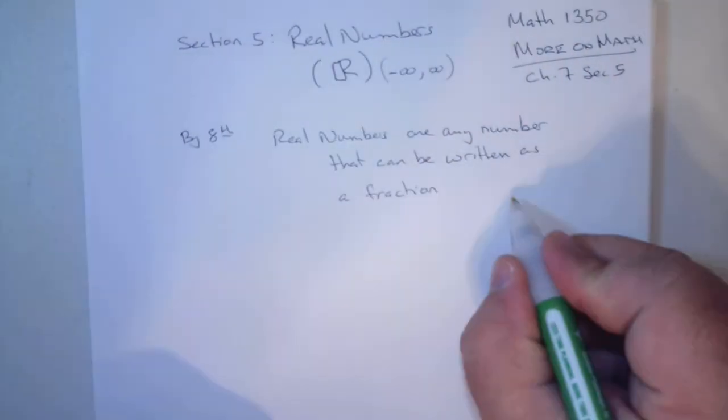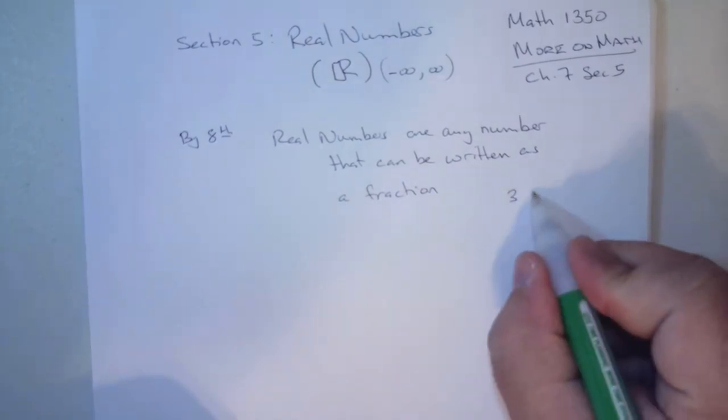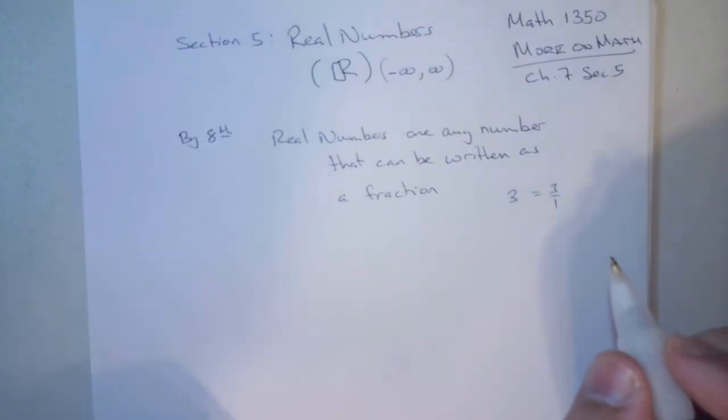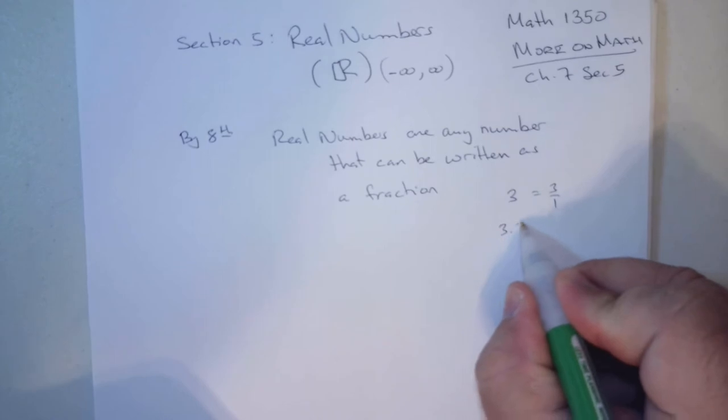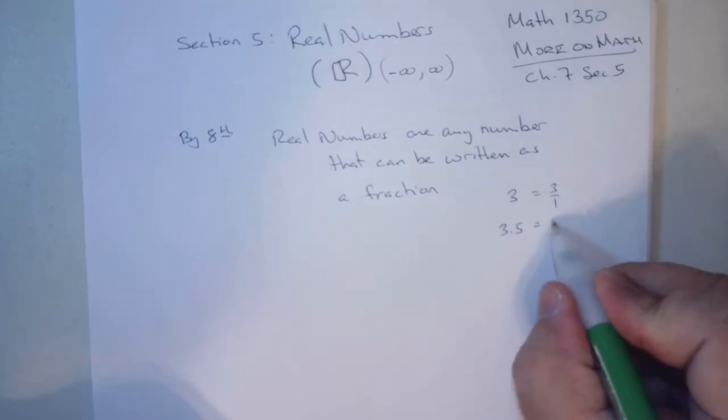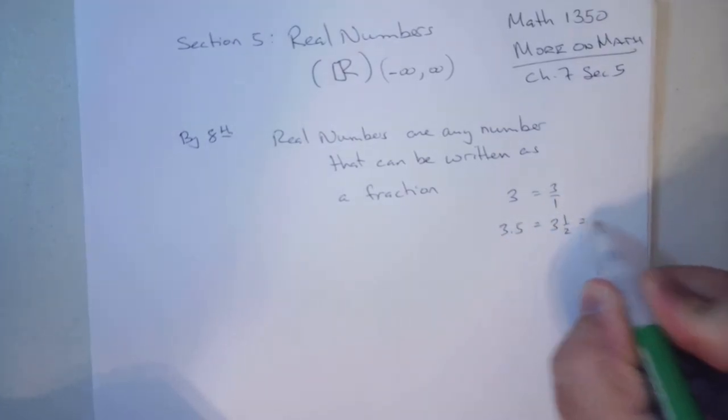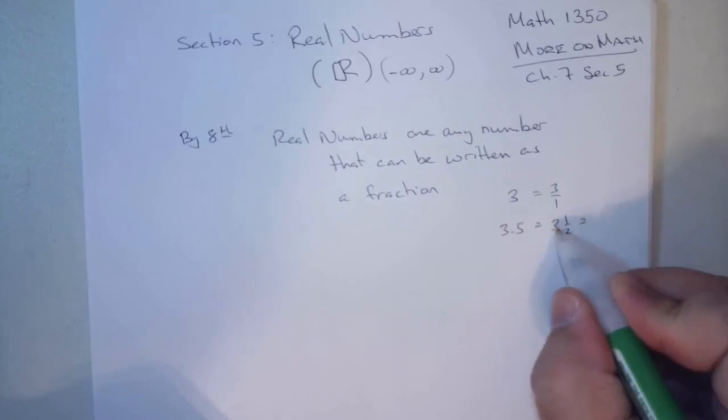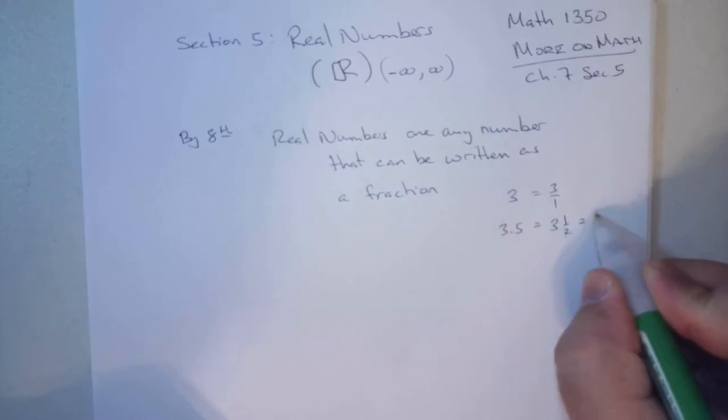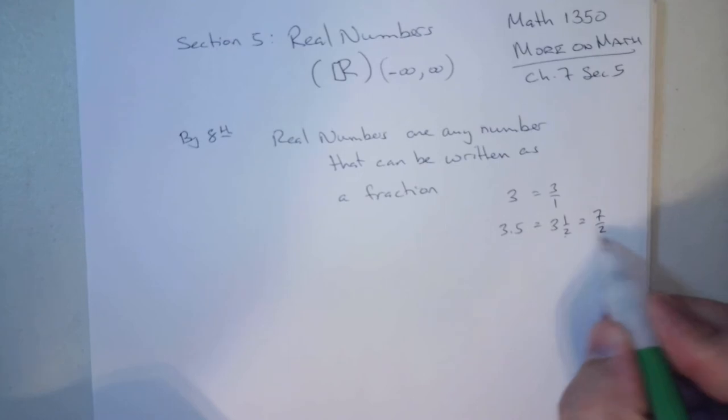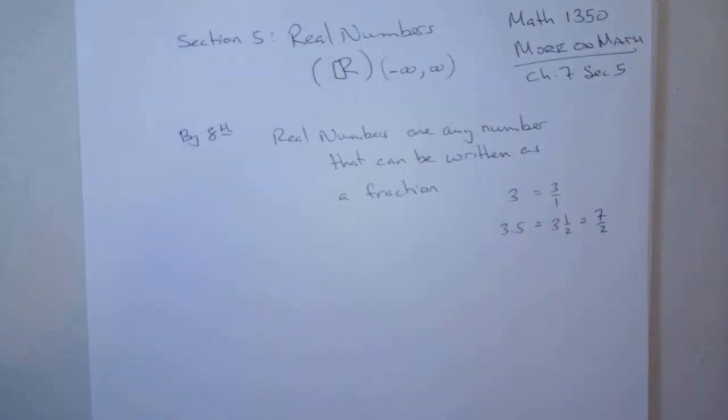Remember, any number. 3 is a fraction, 3 over 1. 3.5 is the same thing as 3 and 1 half, or 3 times 2, 6 plus 1 is 7 over 2. That's 3 and 1 half. So everything can be written as a fraction. That's what we're satisfying the real numbers.